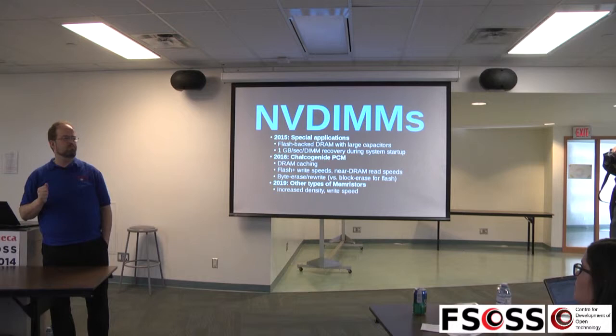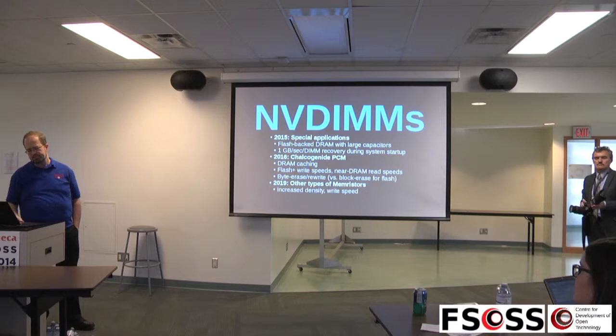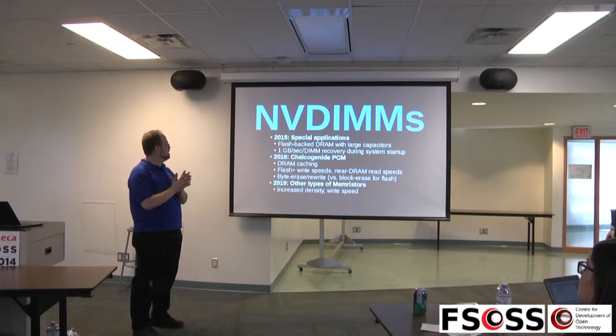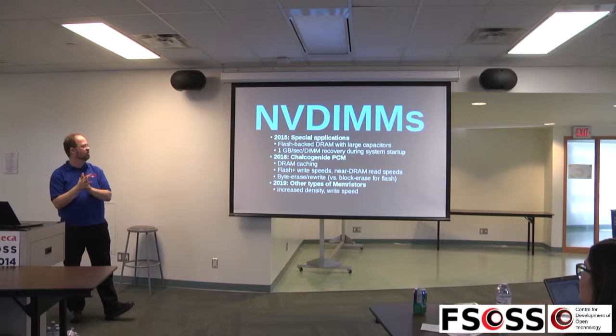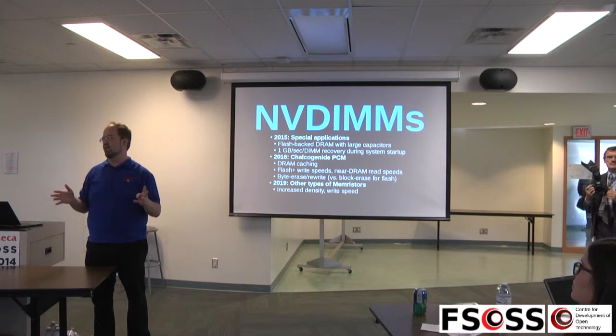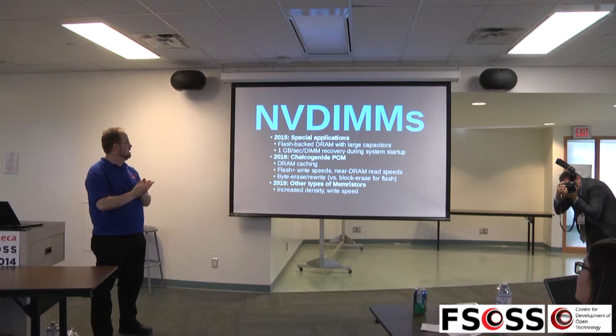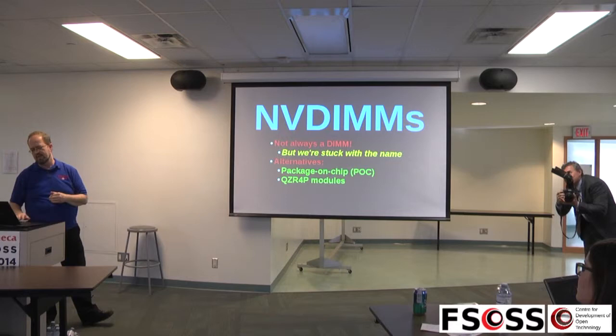On power-up, data is copied from flash back into DRAM with a recovery time of about one second per gig per DIMM. So four 8-gigabyte DIMMs in parallel gives about an 8-second startup time. In 2016 we started seeing glass-based phase change memories with DRAM caching, write speeds approaching flash, read speeds near DRAM, and byte-level erasure — no block erase. By 2019 and on, we got into other types of memristors with much higher density and write speeds approaching traditional DRAM.